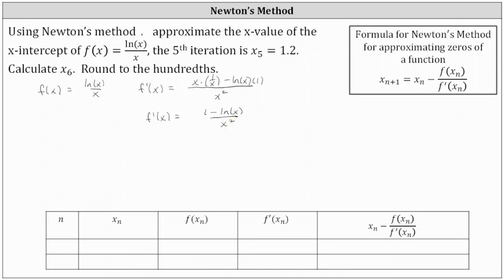Because we're looking for x₆, notice that n equals five since five plus one is six. So x₆ equals x₅ minus f(x₅) divided by f′(x₅). We know x₅ equals 1.2, so x₆ equals 1.2 minus f(1.2) divided by f′(1.2).